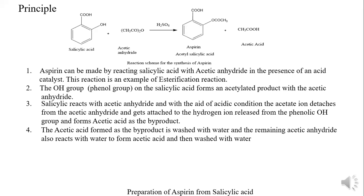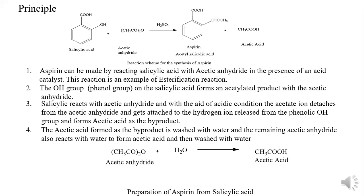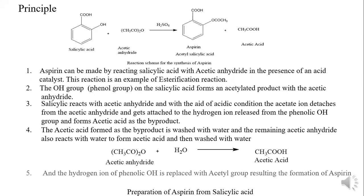The acetic acid formed as a by-product is dissolved in water and separated after the synthesis of aspirin is completed. Since acetic anhydride is taken in excess during the preparation, its removal is also necessary after synthesis. This is done by adding excess water, which reacts with the acetic anhydride and converts it to acetic acid, which is soluble in water and is washed away. This is the basic principle of aspirin synthesis.